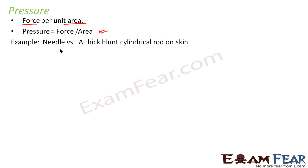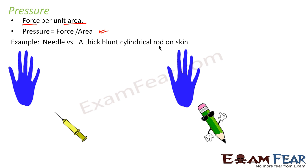Let us take the example of a needle and a very thick blunt cylindrical rod on the skin. What I am trying to explain here is how pressure is dependent on force and area. In the first case we have a syringe or a needle which has a very sharp end. On the other hand you have a pencil, the back of which is real blunt. This is very sharp whereas this is very blunt. The area — the surface area of the point of the needle — is very very small when compared to this blunt surface.